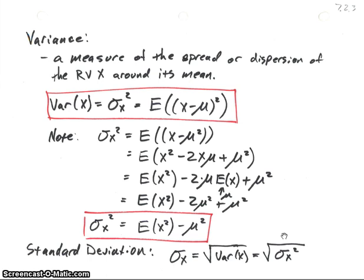The variance is a measure of the spread or dispersion of a random variable around its mean. So we're going to look at how spread out this random variable x is — how much does it vary from its mean. We'll use the Greek letter sigma with a subscript x for our random variable.